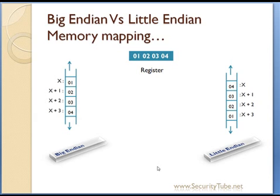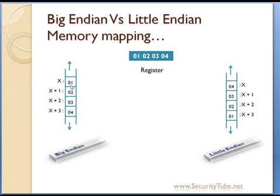Let's talk more about big endian versus little endian memory mapping. If we have a number 01, 02, 03, 04 in a register and we wish to store this number into memory, how exactly will it be stored in a big endian architecture versus a little endian architecture? In big endian hardware, say we have a memory array at addresses X, X+1, X+2, X+3, X+4 in ascending order. Storing 01, 02, 03, 04: the value 01 is stored at address X, 02 at X+1, 03 at X+2, and 04 at X+3. So the number is stored in ascending address order as 01, 02, 03, 04 in big endian architecture.